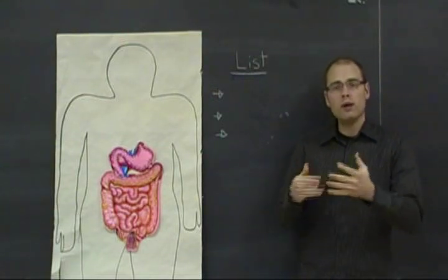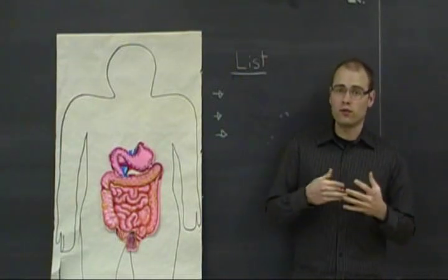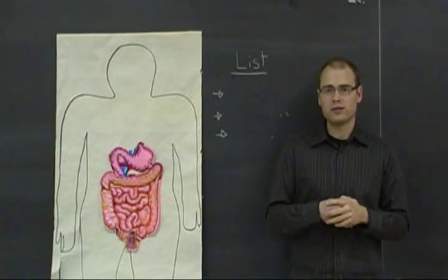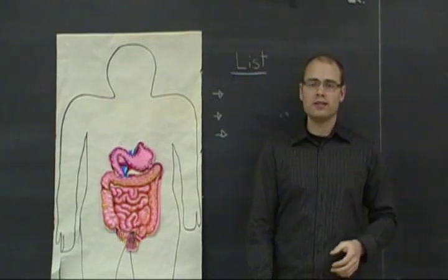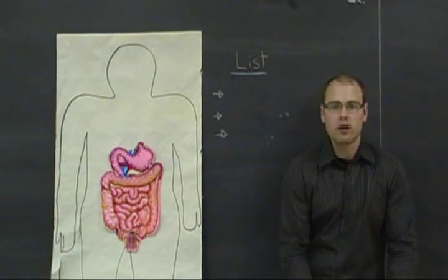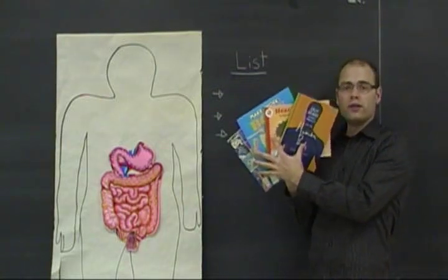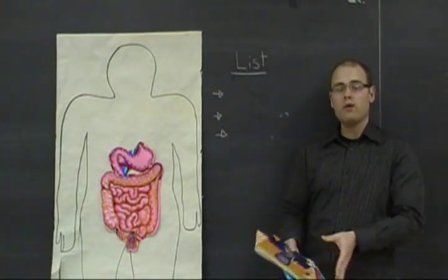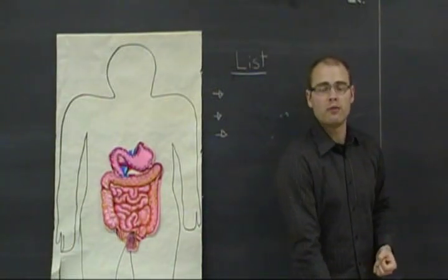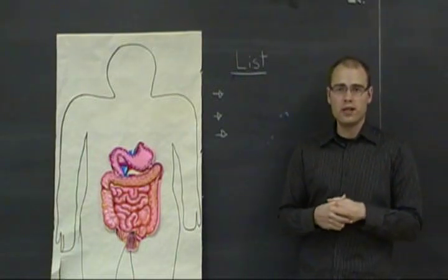Once you have those listed out, you might break your classroom into different groups that will be responsible for different systems. They will become experts on each of these systems. You can let them go to the library and find some books on different themes about their system. They can research that way, or maybe you can use some computer time or they can go on the internet and look up their systems there.